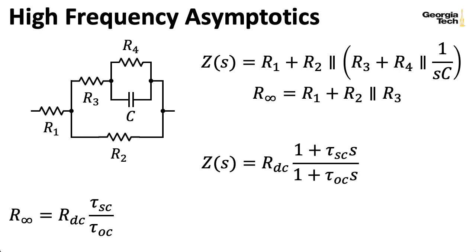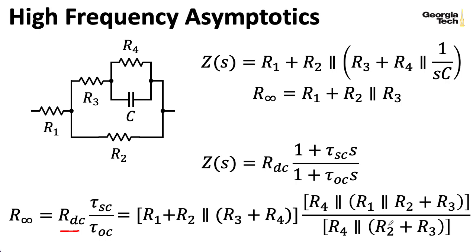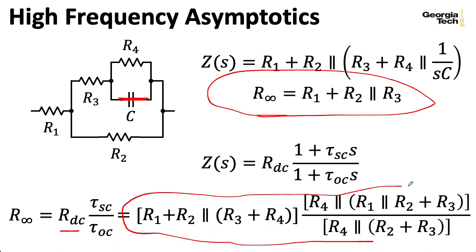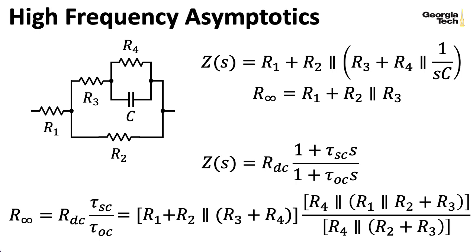Now, if we actually plug in our values for the short circuit time constant and the open circuit time constant in our RDC here, it's a bit of a mess. This more straightforward approach of just looking at the circuit and shorting the cap gives you a much cleaner answer. I will leave it as an exercise for the extremely bored viewer to slog through the algebra needed to take this expression and turn it into this expression up here at the top. Actually don't do that even if you're really bored. There's no reason anybody should have to suffer through that amount of algebra.